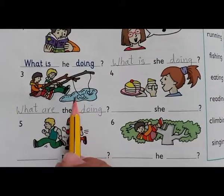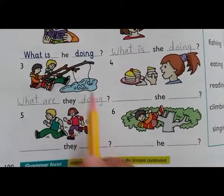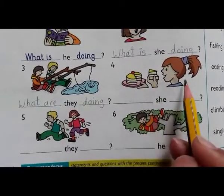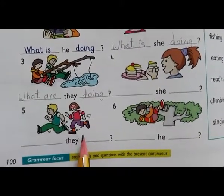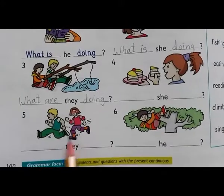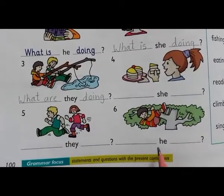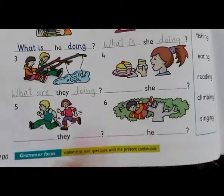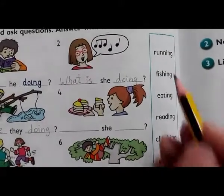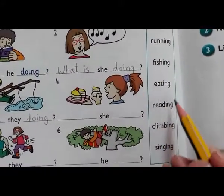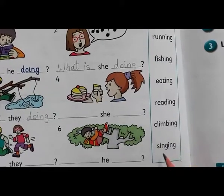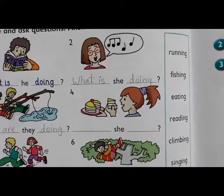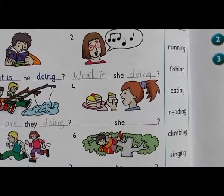What is she doing? She is eating. What are they doing? They are running. What is he doing? He is climbing. All the answers are here: running, fishing, eating, reading, climbing, and singing. You can write the answers in your notebook and answer them verbally as well.